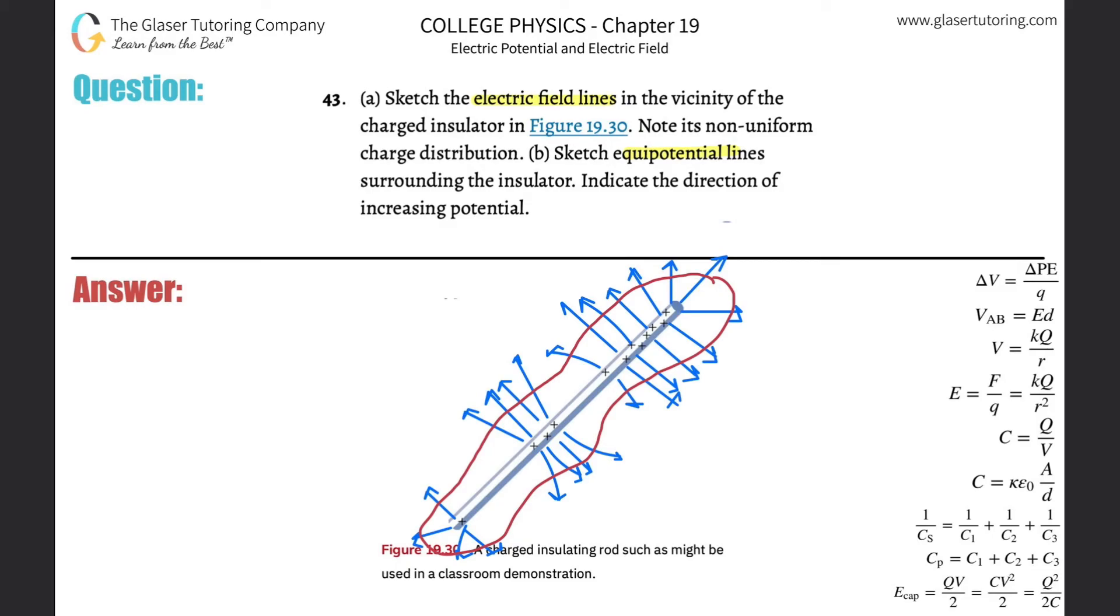Last thing: indicate the direction of increasing potential. So remember if you know the direction of the field lines, they always point away from positive charge and they always point towards decreasing potential. Therefore increasing potential would be pointing then towards the object basically.